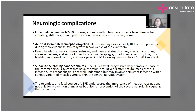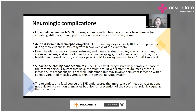Subacute sclerosing panencephalitis, or SSPE, is a fatal progressive degenerative disease of the CNS. It is not an immediate complication — it happens almost 7 to 10 years after measles virus infection, most probably due to a persistent infection with a genetic variant of the measles virus. SSPE is dangerous because it is fatal, has various stages, and there is no treatment toward the end. This underscores the critical importance of measles vaccination, which can easily prevent these devastating neurological sequelae.